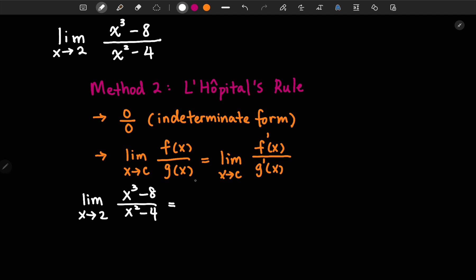To take the derivative of the top and bottom separately, we would get the derivative of the top function, we have 3x squared. Derivative of bottom function here, we have 2x.